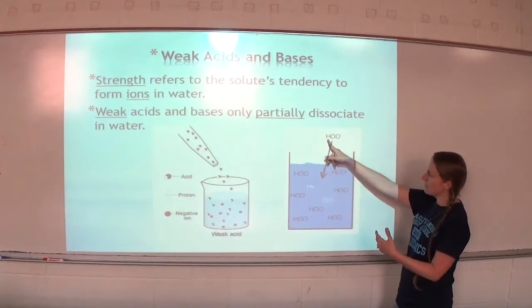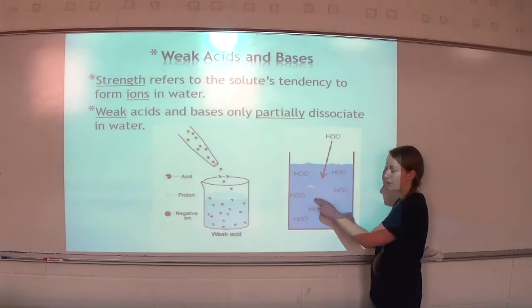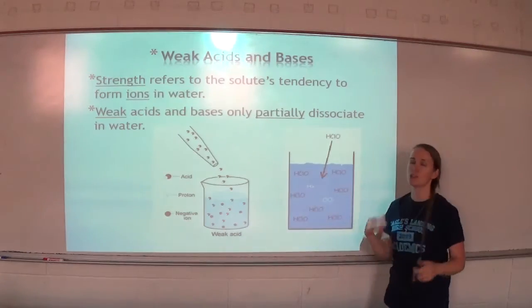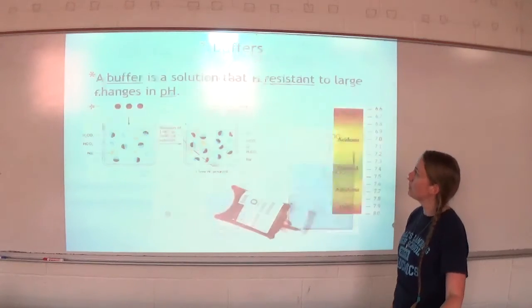Here's another example. We have HClO, and one of them has broken apart. We have an H+ and a ClO-, but many of them have stayed together. So that refers to as a weak acid or base, depending on what substance we're talking about.